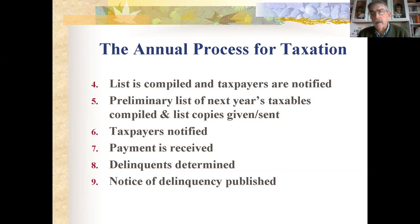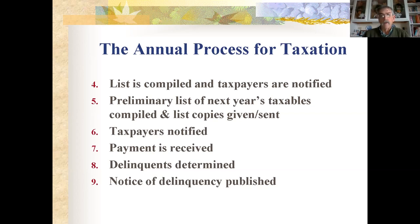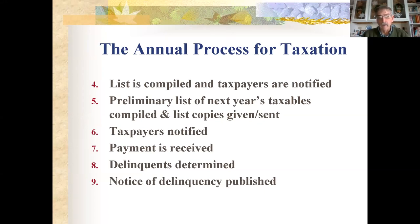Next, the list was compiled and taxpayers were notified of how much they owed. A preliminary list of next year's taxables was also made out. One copy was sent to the state and one retained locally, with a third copy serving as next year's preliminary list. Payment was received and a receipt given — you'll often find those receipts in probate files or family papers. If someone didn't pay, a notice of delinquency was published in the nearest newspaper.